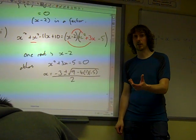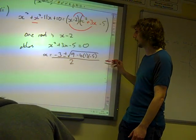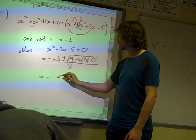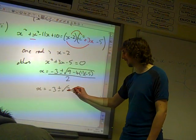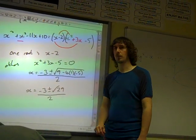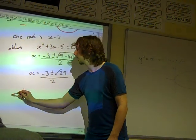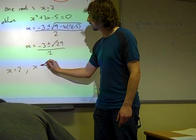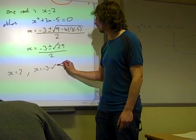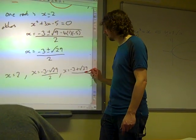You have of course got a calculator in this module, so you can type this into your calculator, and most of you have got a calculator that will give you an answer nicely simplified in surd form if you did that. I'm not going to use the calculator. I've got what, 9 plus 20, so root 29 in there, over 2. And so my other two roots are x equals 2, sorry I was supposed to say x equals 2, and then we've got x equals minus 3 minus root 29 over 2, and x equals minus 3 plus root 29 over 2.